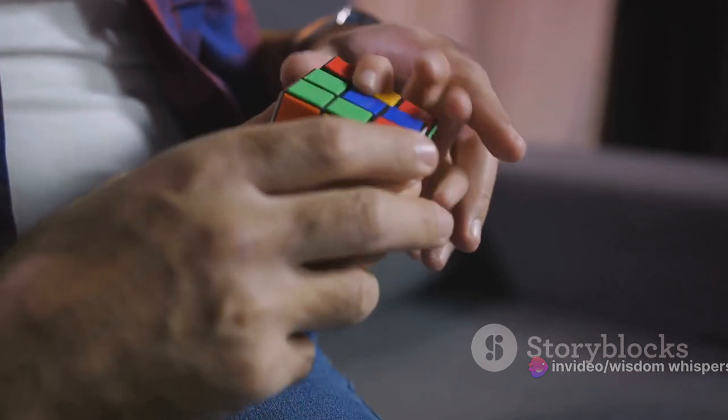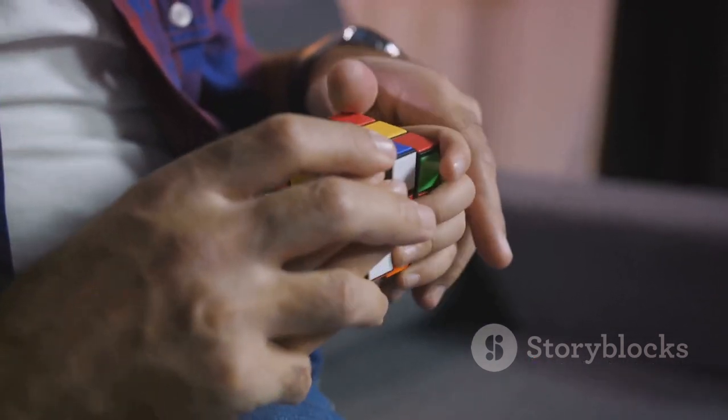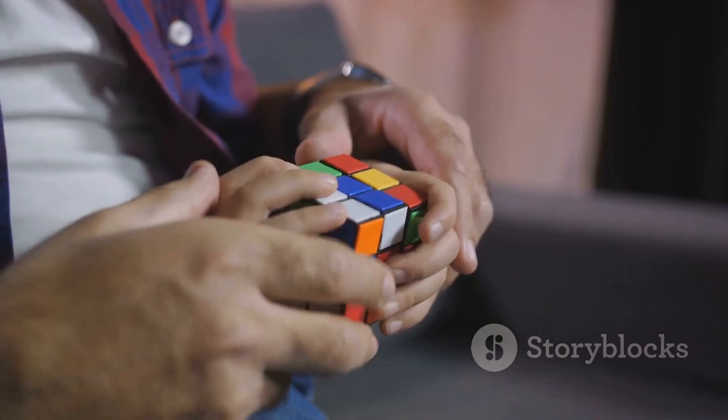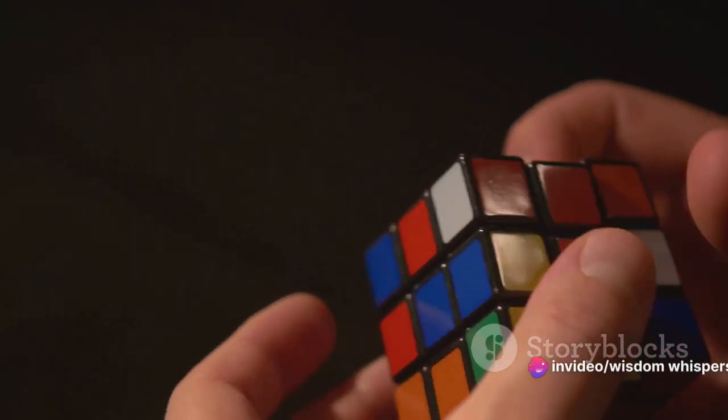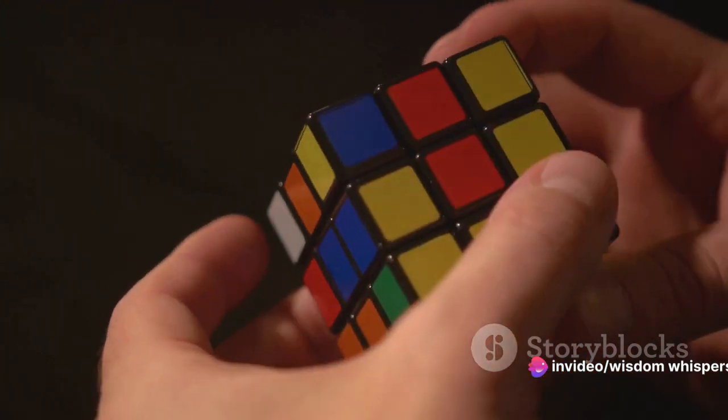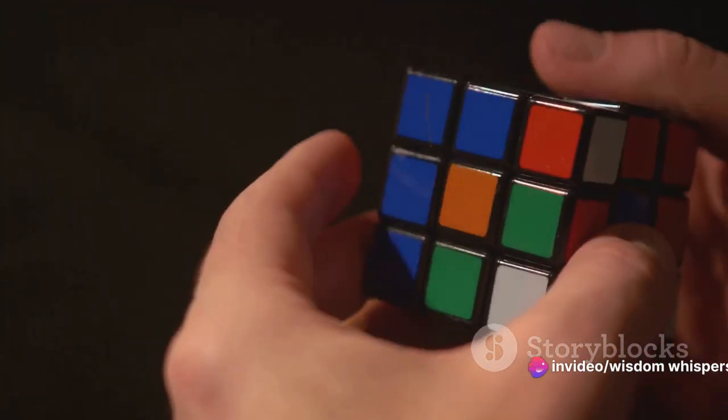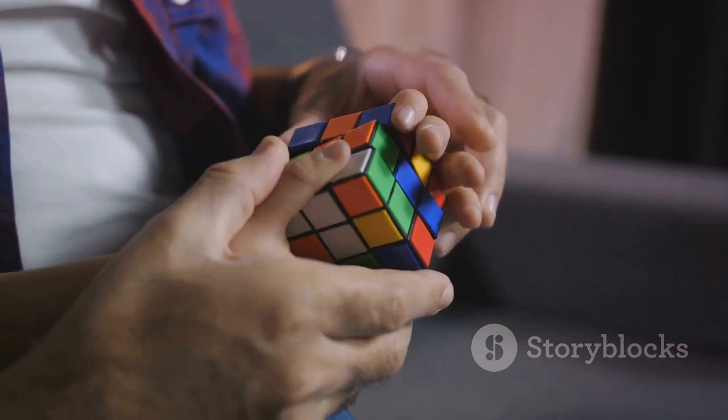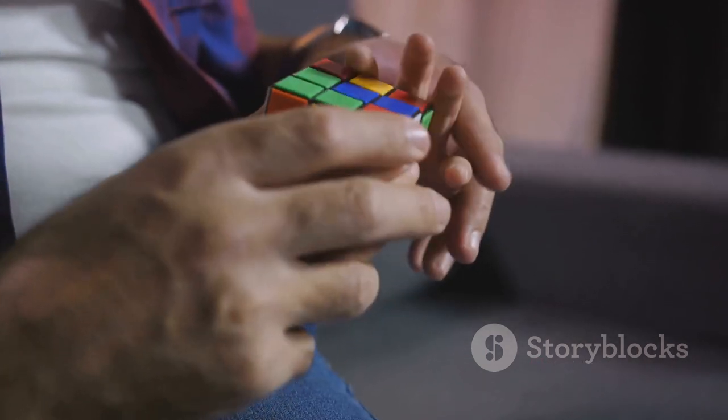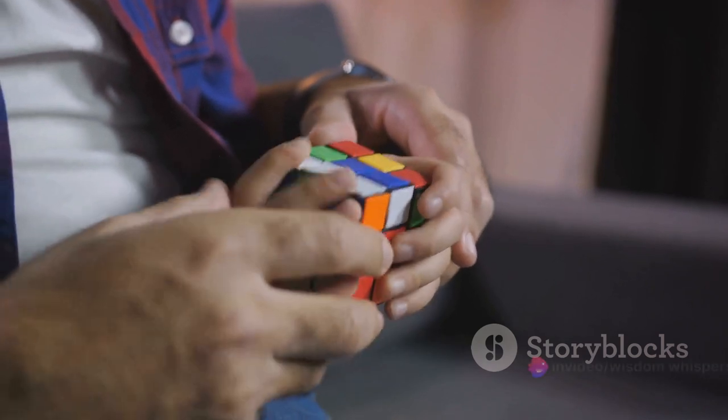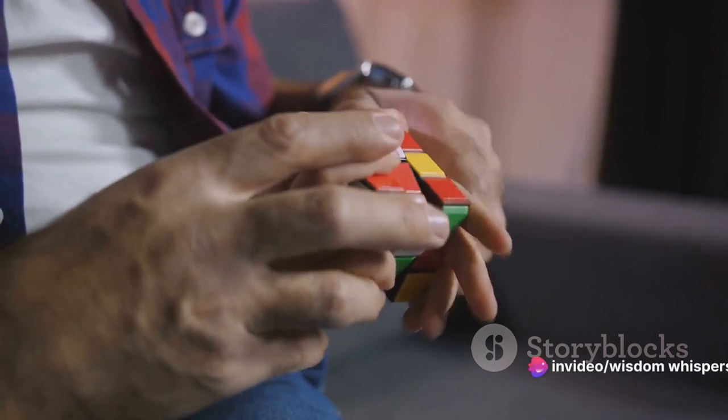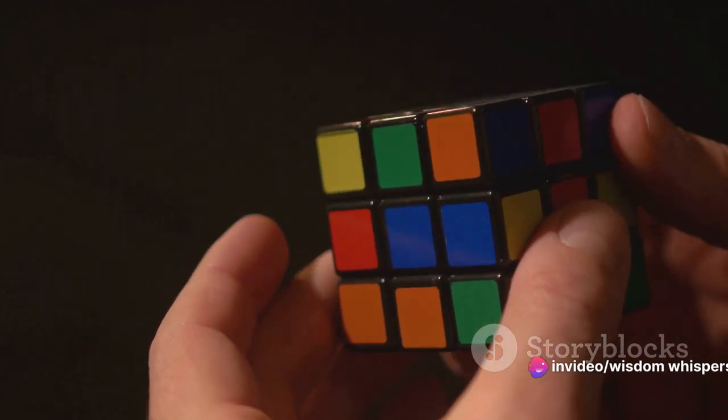Now let's talk colors. The beauty of the Rubik's Cube is in its simplicity. Six colors, six sides. But the arrangement of these colors is crucial. An incorrectly placed piece can throw off the entire solve. So it's important to always be aware of where each color should be in relation to the others. Each color has an opposite. White is opposite yellow, blue is opposite green, and red is opposite orange. This arrangement never changes, and understanding it will help you in your quest to solve the cube.